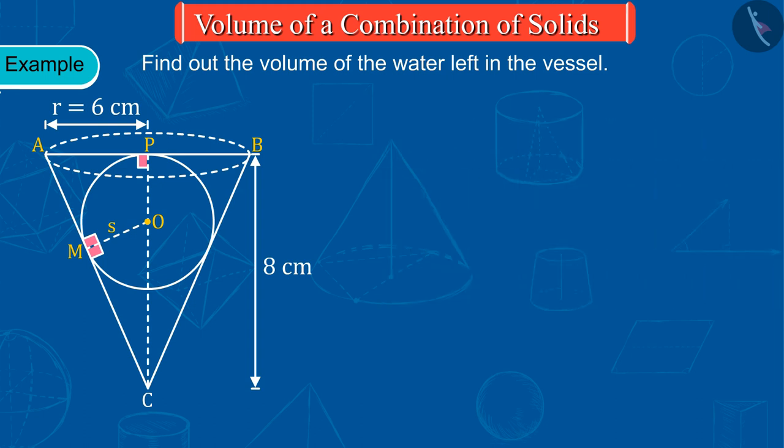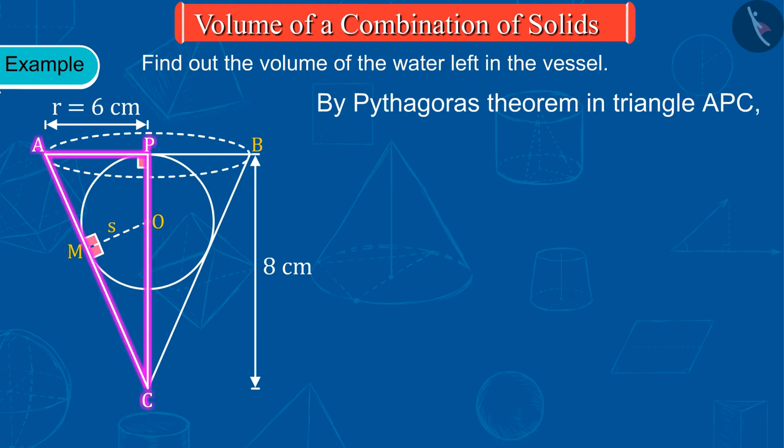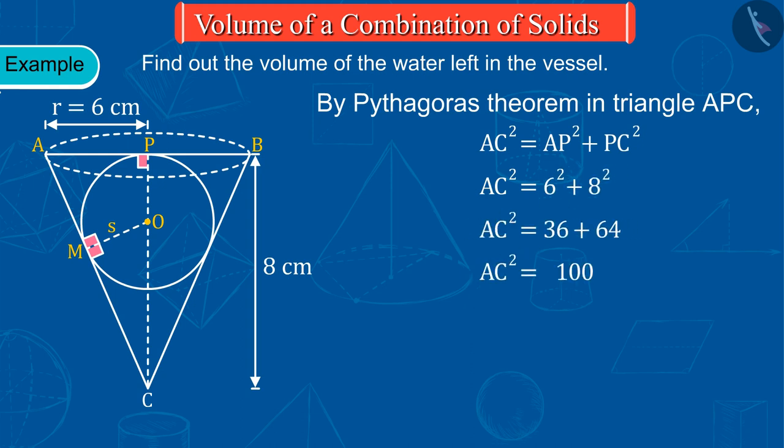Now, by Pythagoras theorem in triangle APC, we get AC equals to 10 cm.